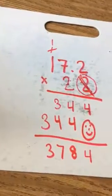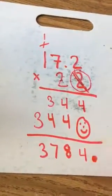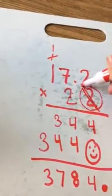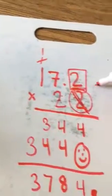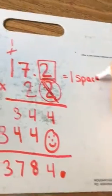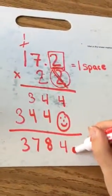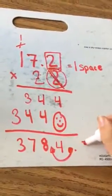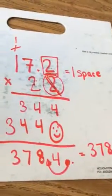This is so important that we remember that we're not done here. Our answer is not 3,784. But we know with whole numbers, our decimal always starts here. We look at the number. Before the decimal, there's only 1. So that means we move 1 space. So I start down here, and I move 1 space. And my answer is 378.4.